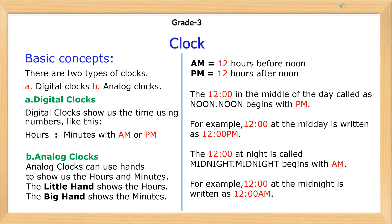A.m. is 12 hours before noon. P.m. is 12 hours after noon. The 12 o'clock in the middle of the day is called noon. Noon begins with p.m. For example, 12 at midday is written as 12 p.m.